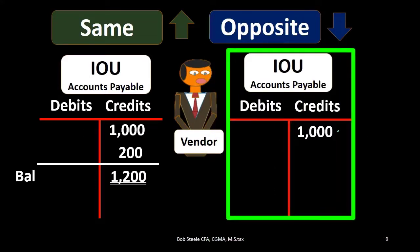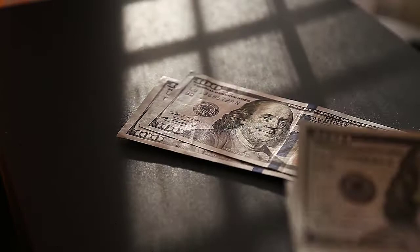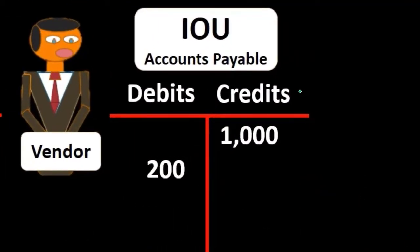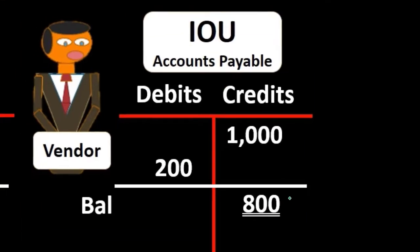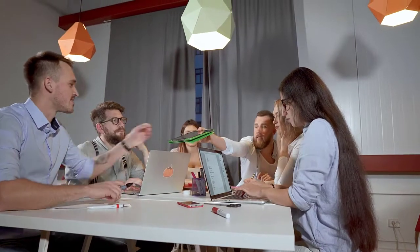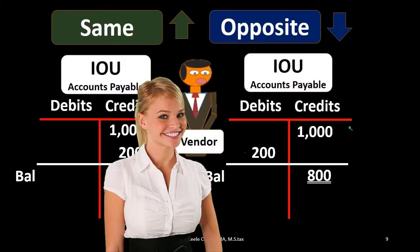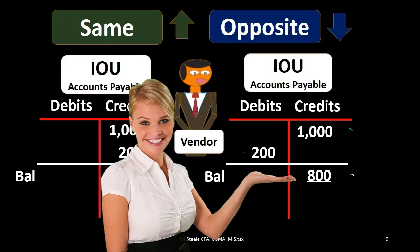If we have that same $1,000 beginning balance and want to make it go down — for example, we paid off the liability and need to reduce the amount we owe — we apply the rule and do the opposite. It has a normal credit balance, so the opposite is a debit. The credits are still winning by the difference: $1,000 minus $200 leaves an $800 credit balance. The credits will always win for a credit-balance account; doing the opposite reduces the credit balance.